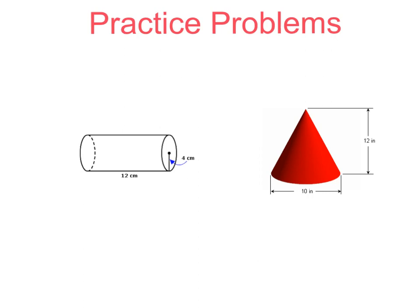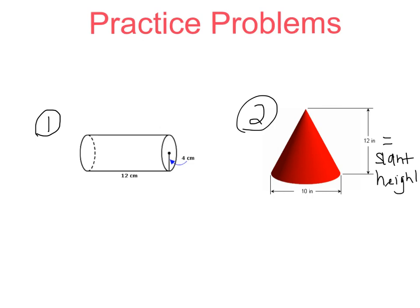Here are your two practice problems. The first one is the surface area of a cylinder. The second one is the surface area of a cone. The 12 inches shown is the slant height of the cone, just to be clear.